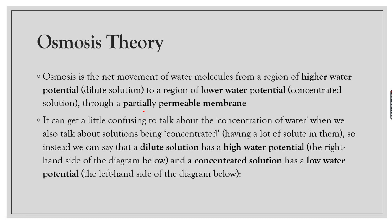Why do we use 'higher water potential' instead of 'higher concentration of water'? It can get confusing to talk about the concentration of water when we also talk about solutions being concentrated, because 'concentrated' means having a lot of solute. These two terms can clash with each other and you might lose a mark, since definitions are typically worth one or two marks. So it's important to use the correct vocabulary.